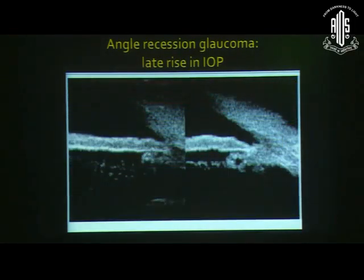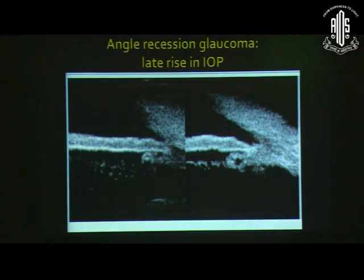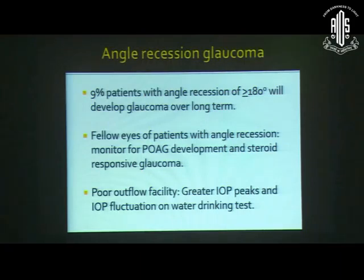We must not stop monitoring the patient who harbors angle recession for glaucoma, even later in the future. This UBM picture shows on the left side a normal angle, but on the right there is an increased distance between the scleral spur and the iris root, indicating the presence of angle recession.